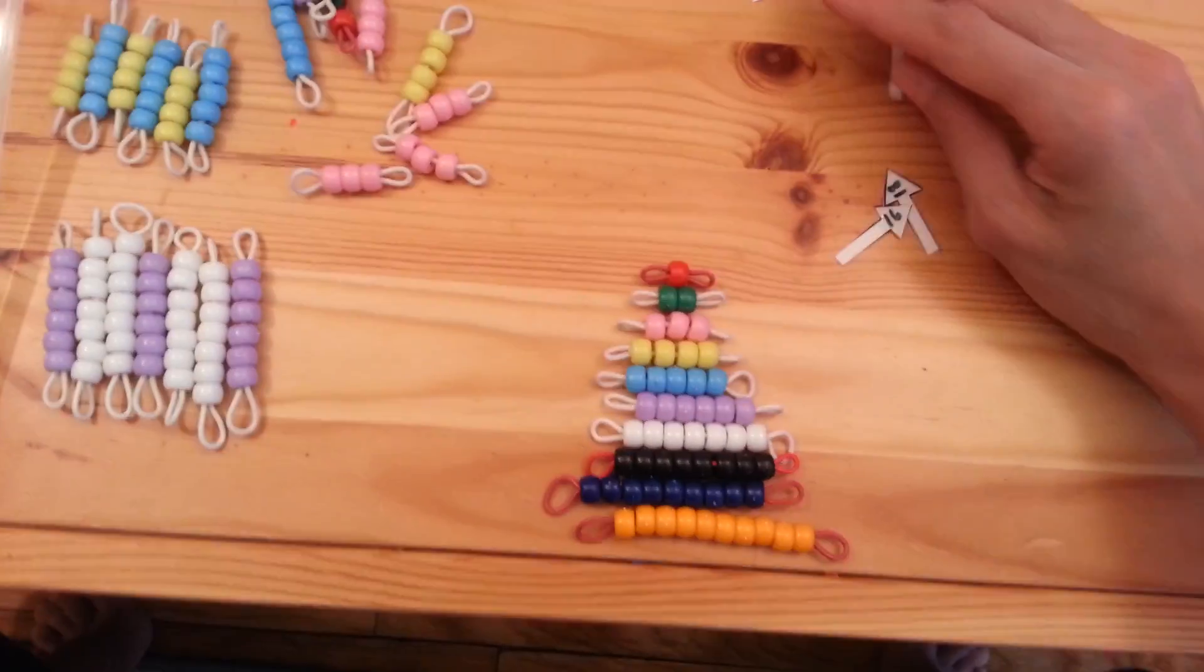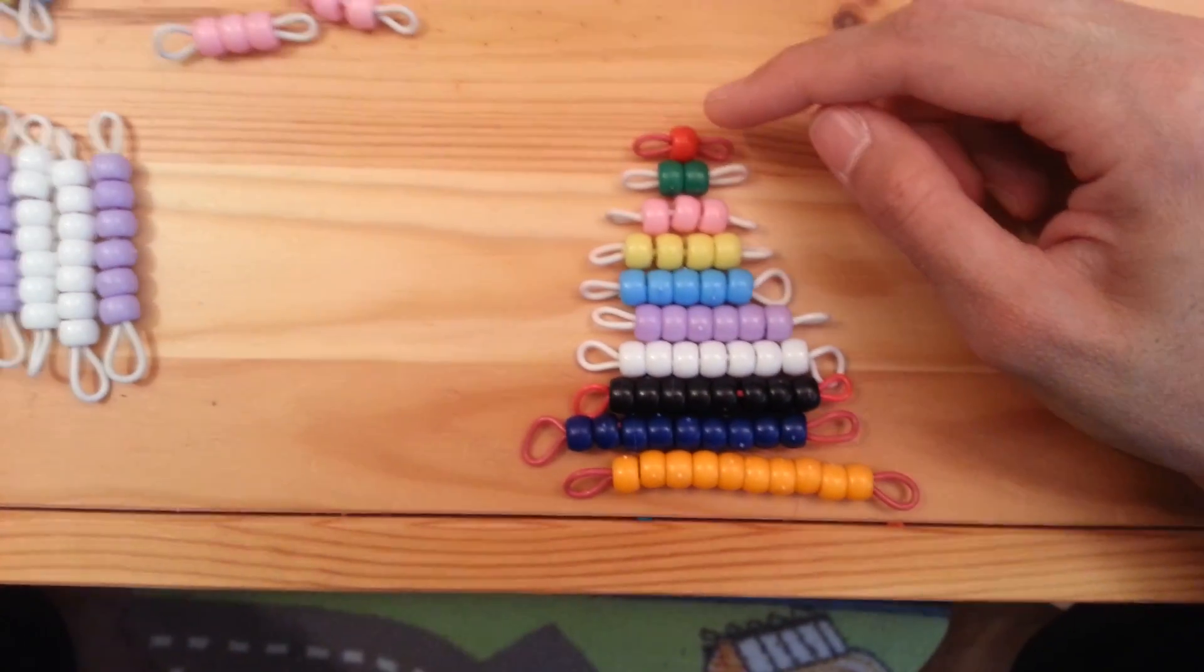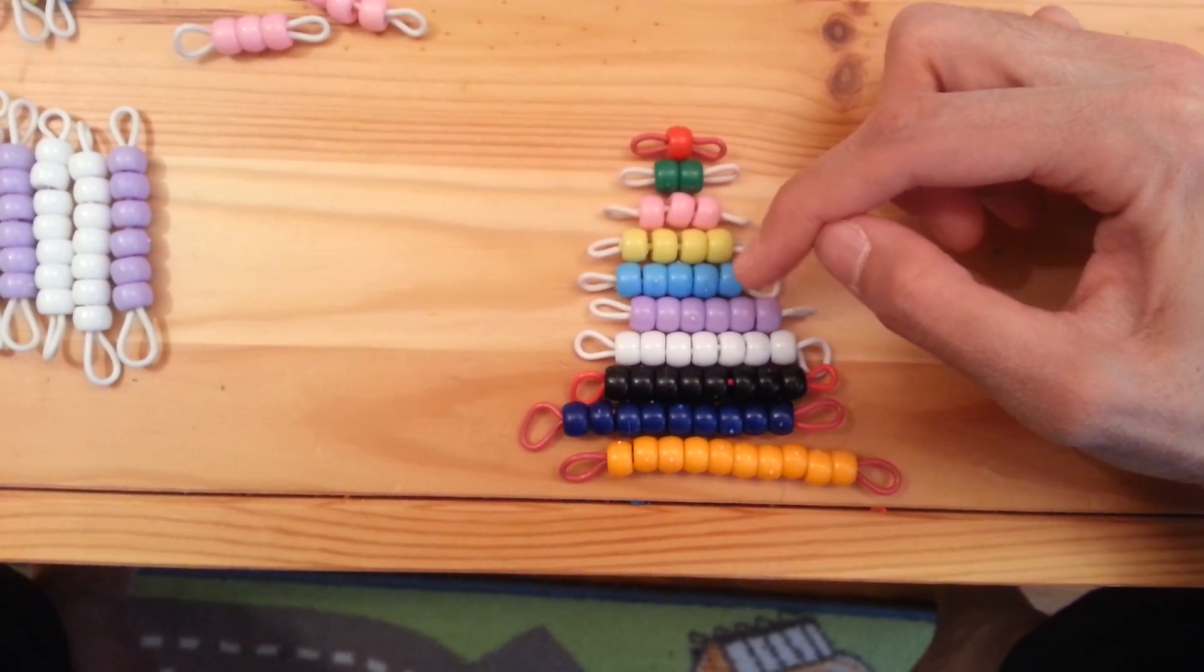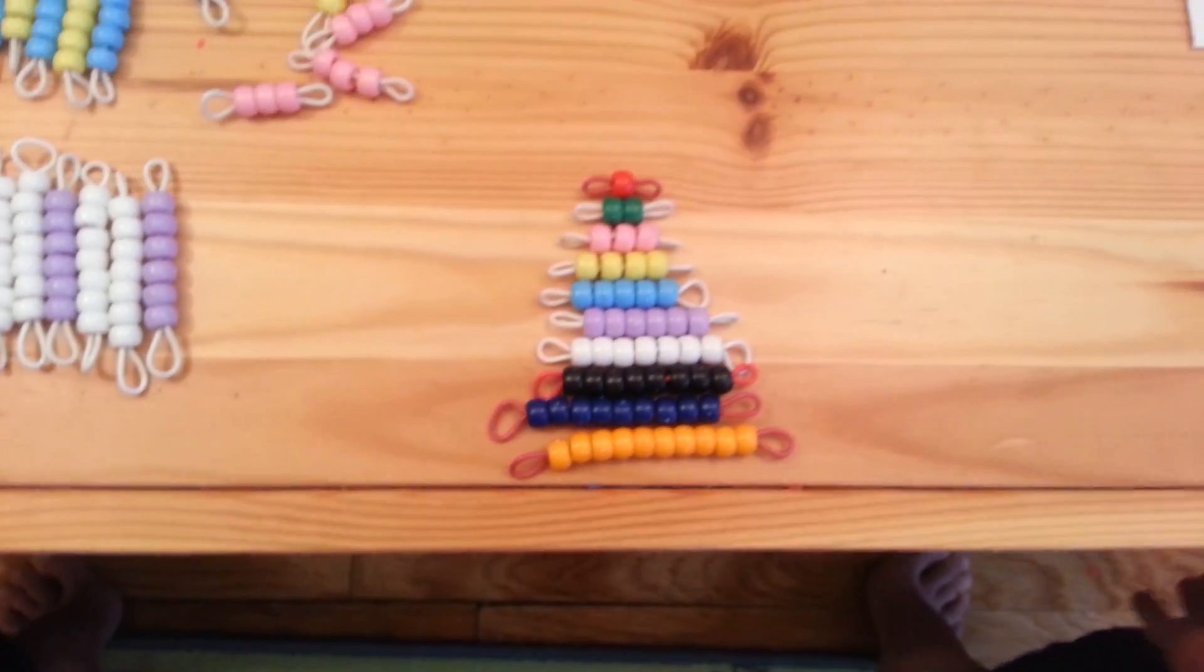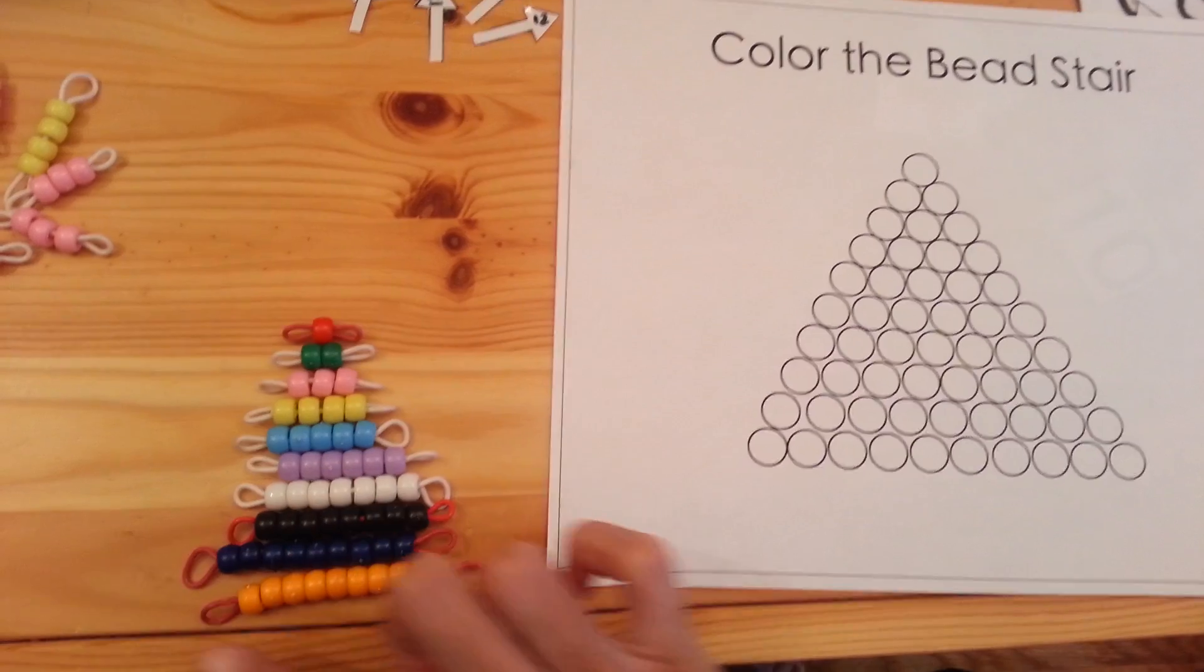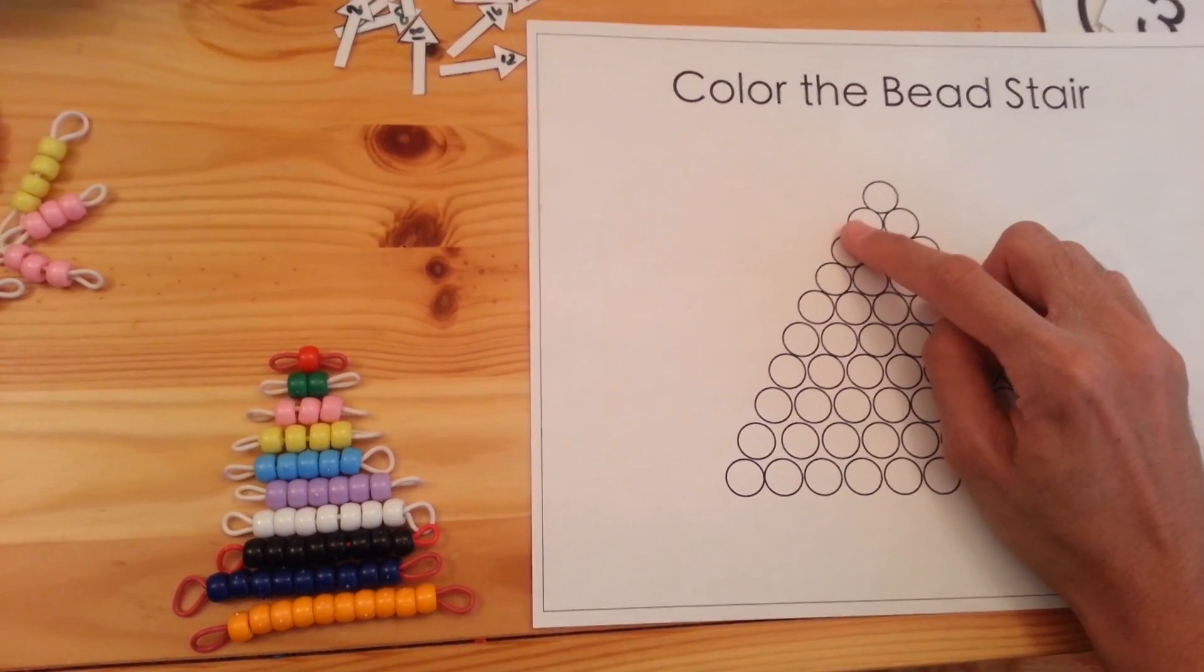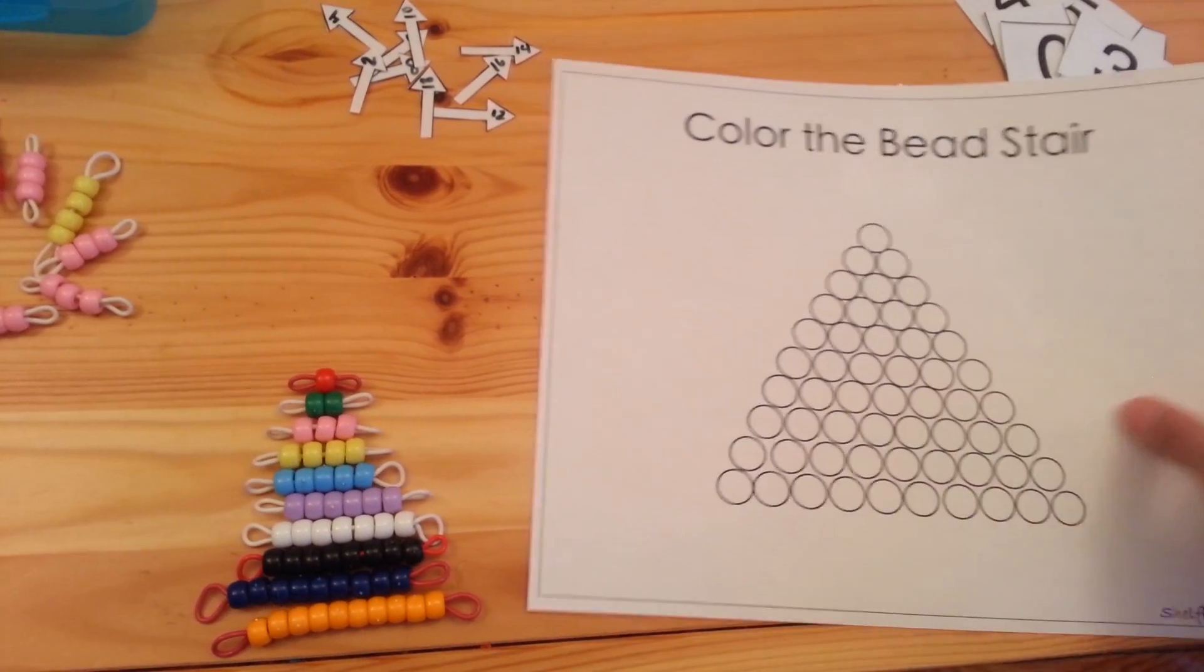Something else you could do is you could have them create a bead stair. This is good for number order as well. The child would line up the beads from one through ten. One, two, three, four, five, six, seven, eight, nine, ten. And once they have done that, you can have them do a worksheet like this one. This is Color the Bead Stair, and you can get this one for free on my blog. And the child would then use this bead stair that they've created and color the beads here. So the first one here would be red, then this one would be green, this would be pink, this would be yellow, and so on until they have completed the bead stair.